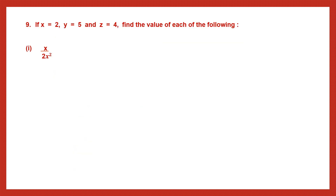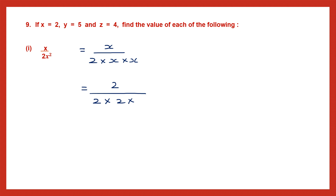Question 9: if x is 2, y is 5, and z is 4, find the value of each of the following. For the first one: x divided by 2 into x into x. Substituting: x is 2 in the numerator, and in the denominator 2 into 2 into 2. We can cancel one 2 from top and bottom. In the numerator we just have 1, and in the denominator 2 twos are 4. So the answer is 1 by 4.